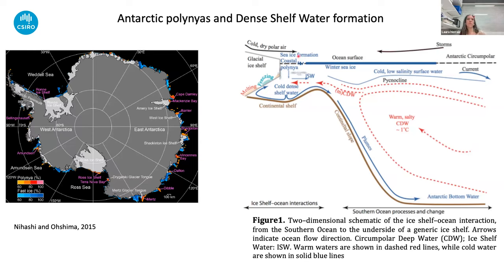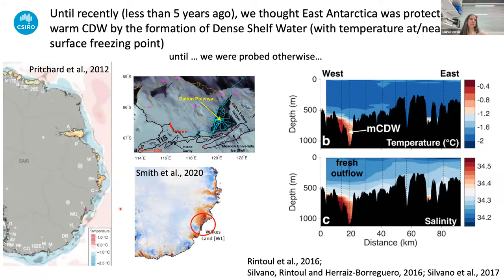The key processes are katabatic winds opening coastal polynyas, then sea ice starts forming with rejection of salt that gets mixed up throughout the whole water column, and we form cold dense shelf water. For East Antarctica, you see that almost every basin has a coastal polynya. Up until quite recently, we thought that the whole East Antarctic continental basin was protected by the formation of dense shelf water — cold water dominating the continental margins.